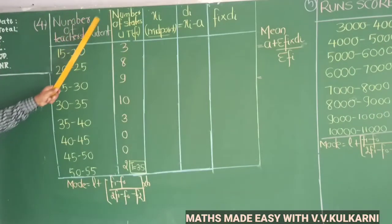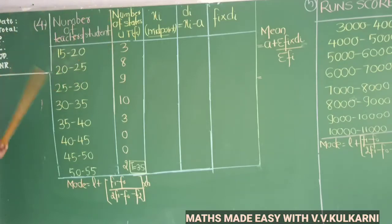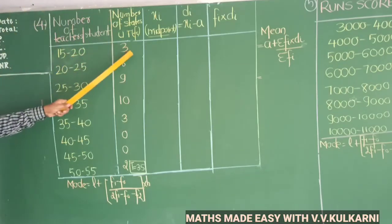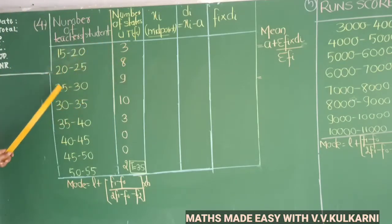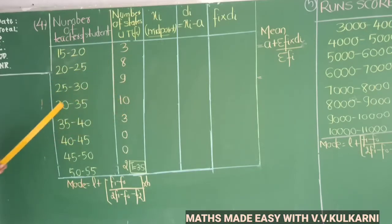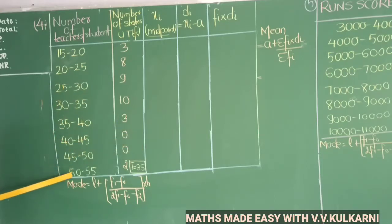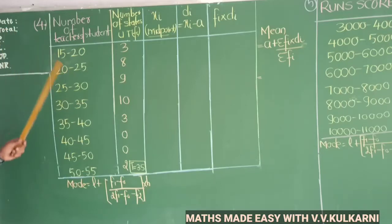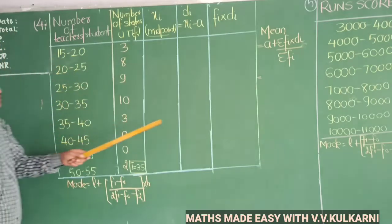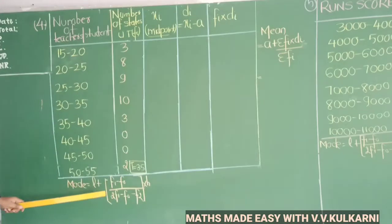The data shows number of teachers per student and number of states and UTs. The class intervals are: 15-20 with frequency 2, 20-25 with 8, 25-30 with 30, 30-35 with 10, 35-40 with 40, 40-45 with 0, 45-50 with 0, and 50-55 with 2. You are asked to find the mean and mode of this data.